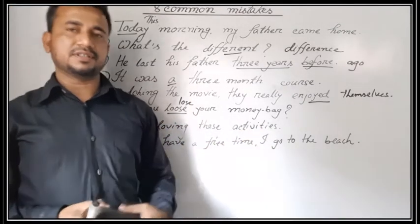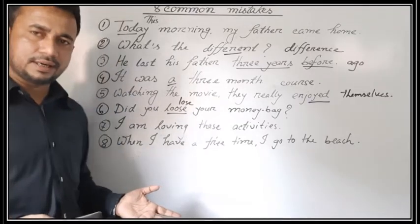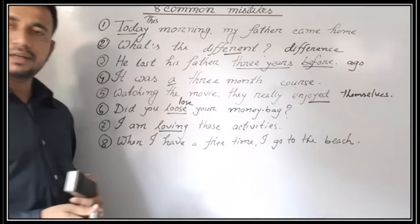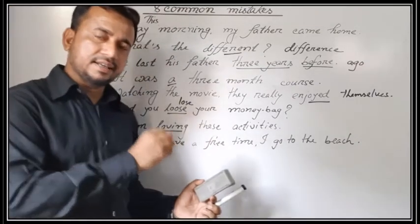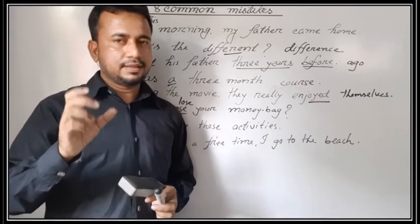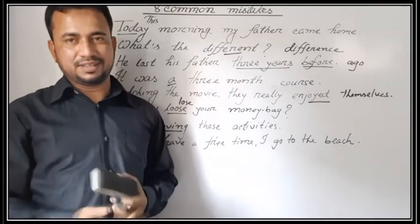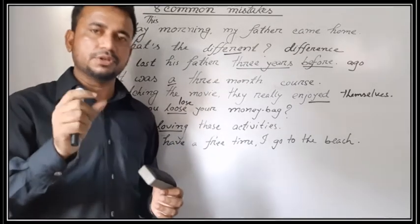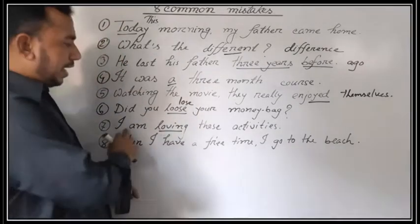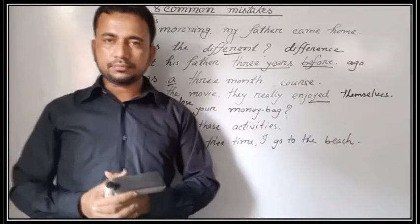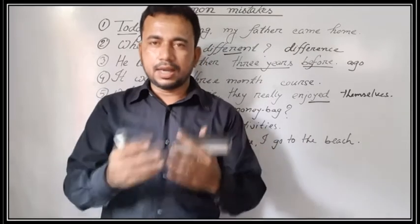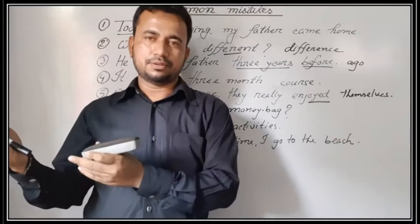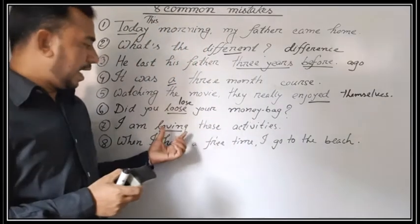Look at sentence number seven: 'I am loving these activities.' What's wrong with this sentence? It's also wrong because 'love' is a stative verb, and a stative verb doesn't allow the '-ing' form. Love, hate, etc. are stative verbs, so they don't allow the '-ing' form. It will be 'I love these activities' — 'I love my mother,' 'I loved my mother,' and in the future 'I will love my mother.' The '-ing' form is not allowed.